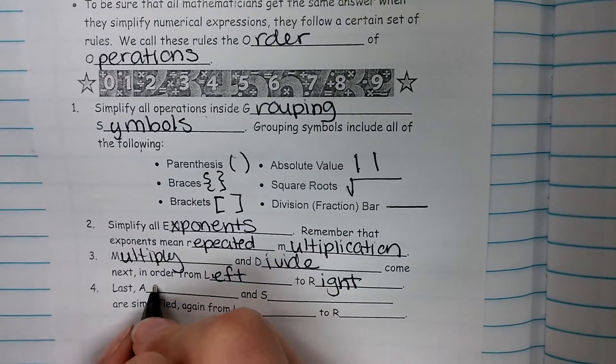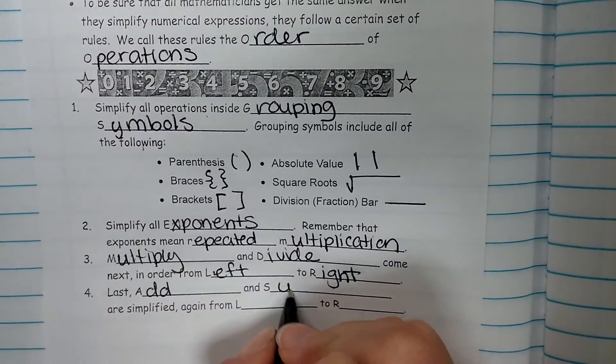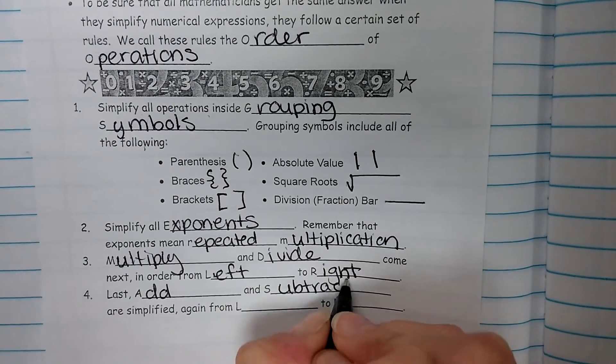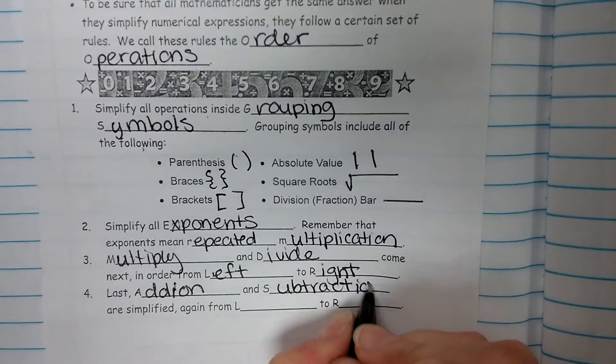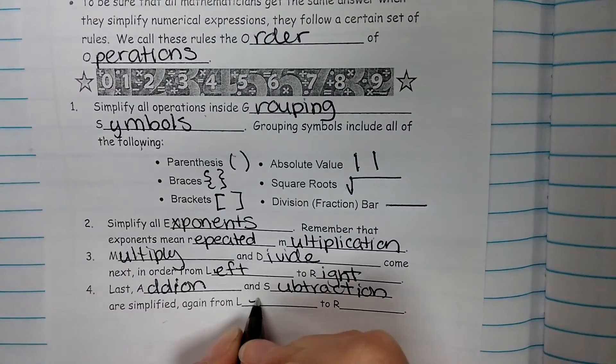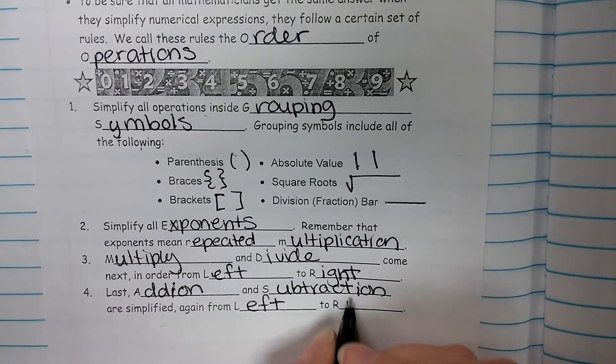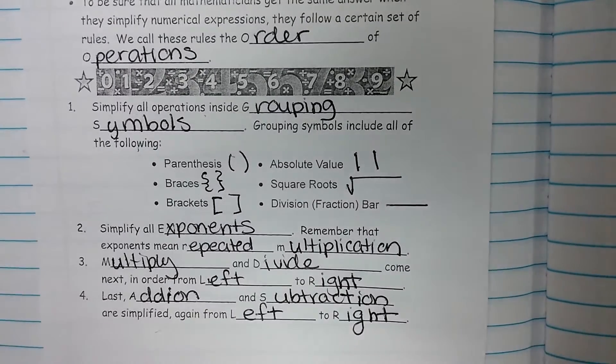And last, we add or subtract. Addition and subtraction are simplified, again, from left to right. So four steps.